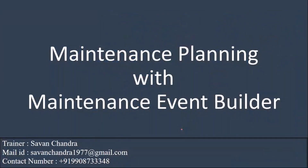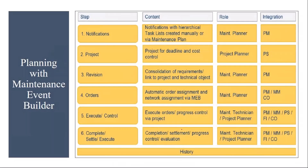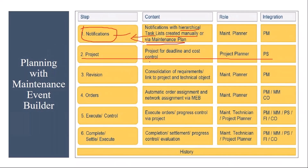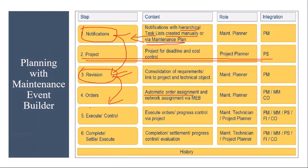Now we will continue and see maintenance planning with the Maintenance Event Builder — how the planning is done. First, you will be creating the notification. These notifications can be created manually or via a maintenance plan automatically. These notifications are assigned with a hierarchical task list. You can also create a project if you have integration with the PS module. Then you create a revision, assign the notifications to the revision, and from the revision you generate the work orders in one go — automatic order generation via MEB. Then execution and closure of the orders follow.